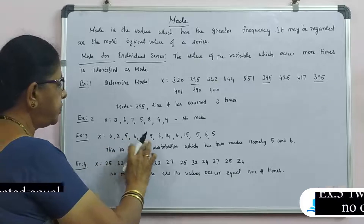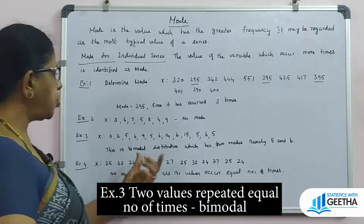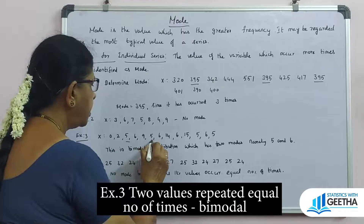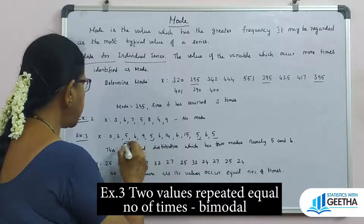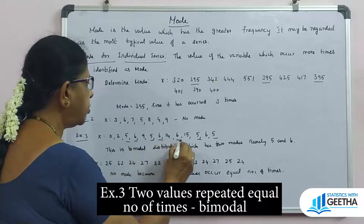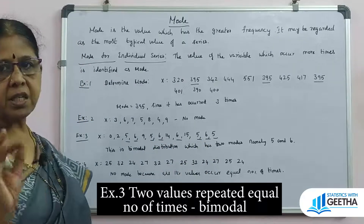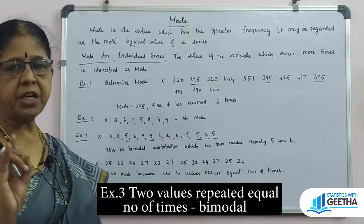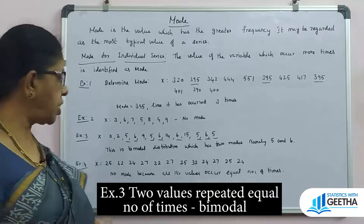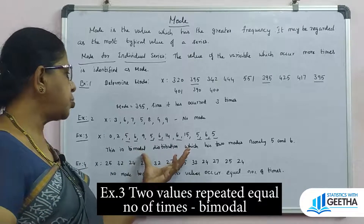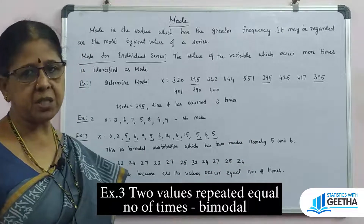In another problem, there are two modes — 5 and 6. The value 5 appears in the distribution and the value 6 also appears, each occurring the same maximum number of times. So this is a bimodal distribution, which has 2 modes, namely 5 and 6.